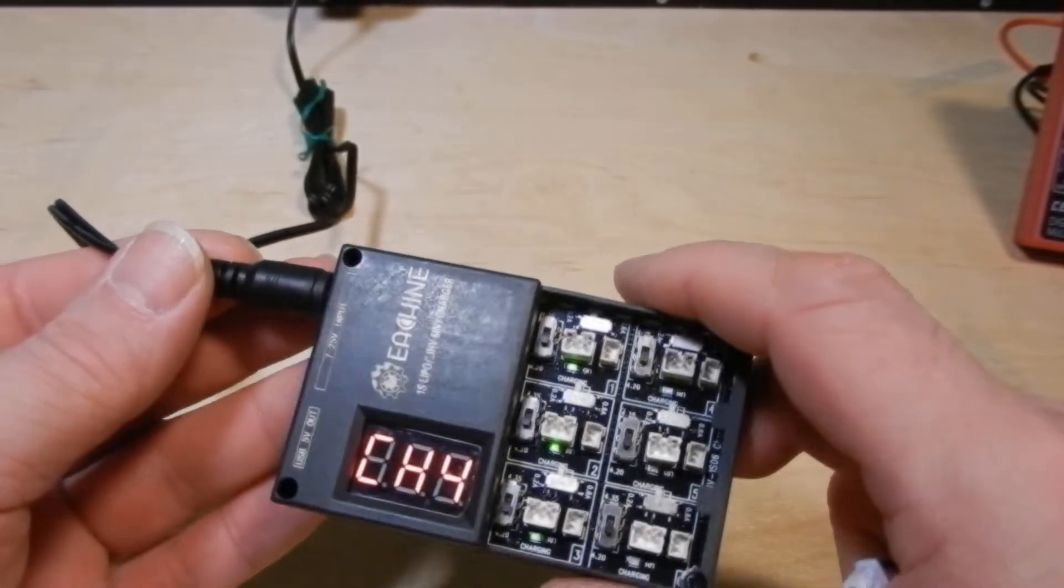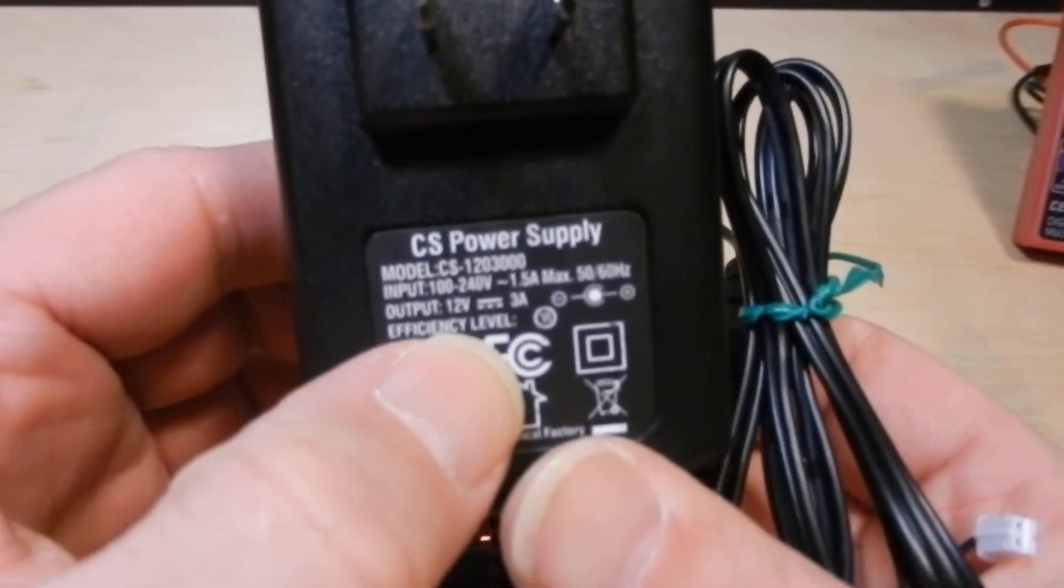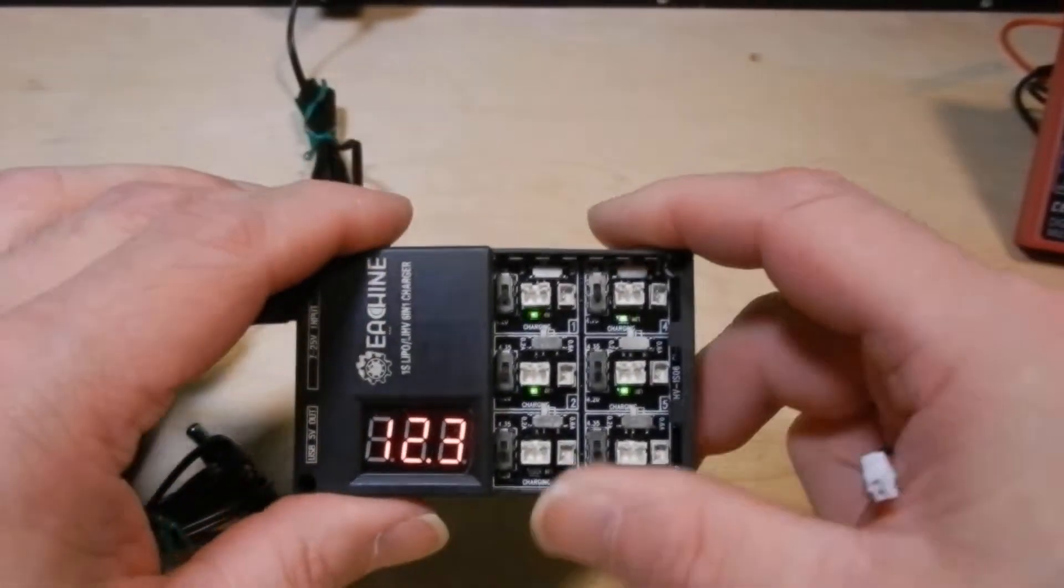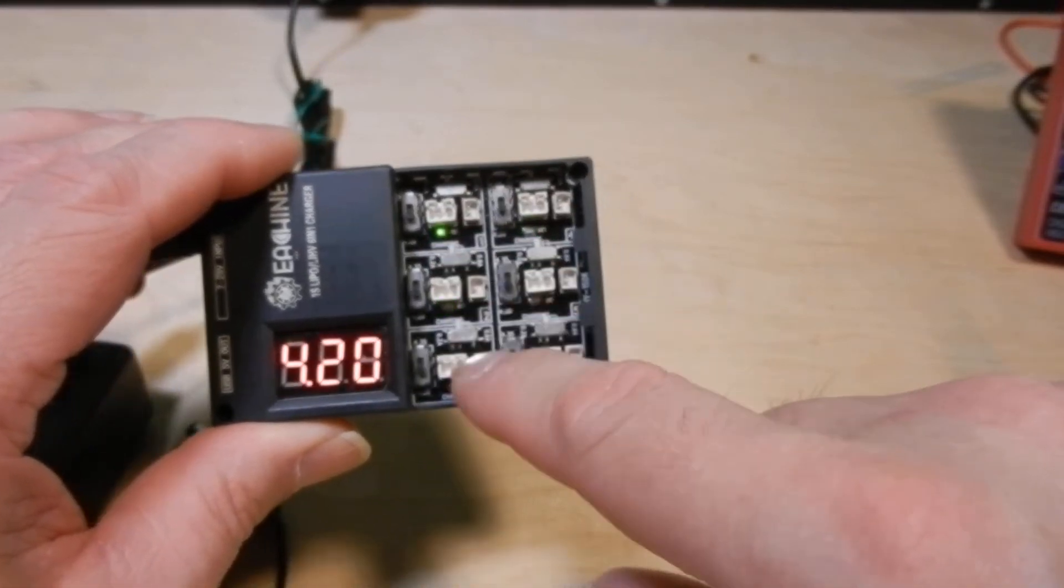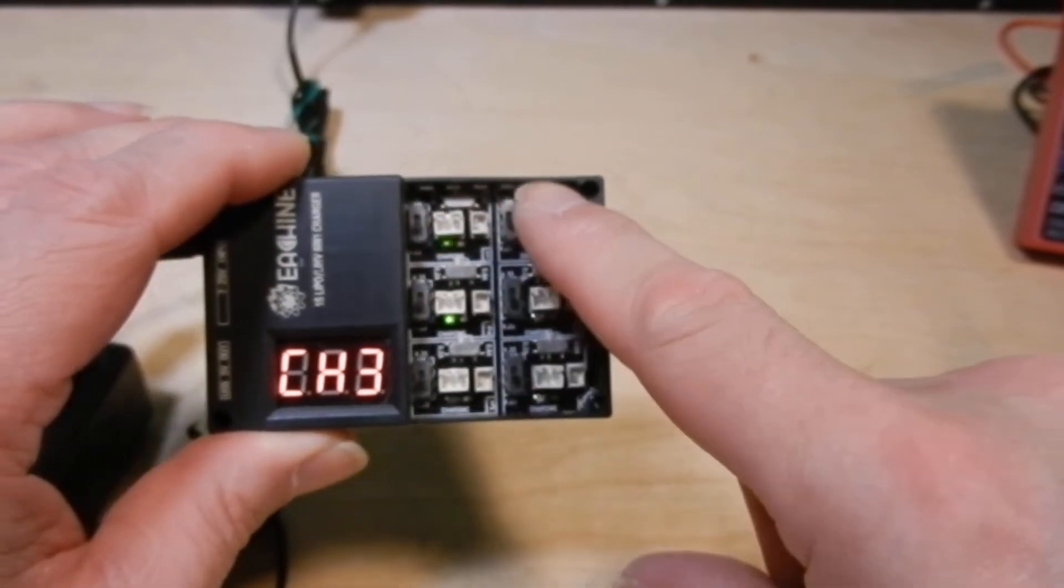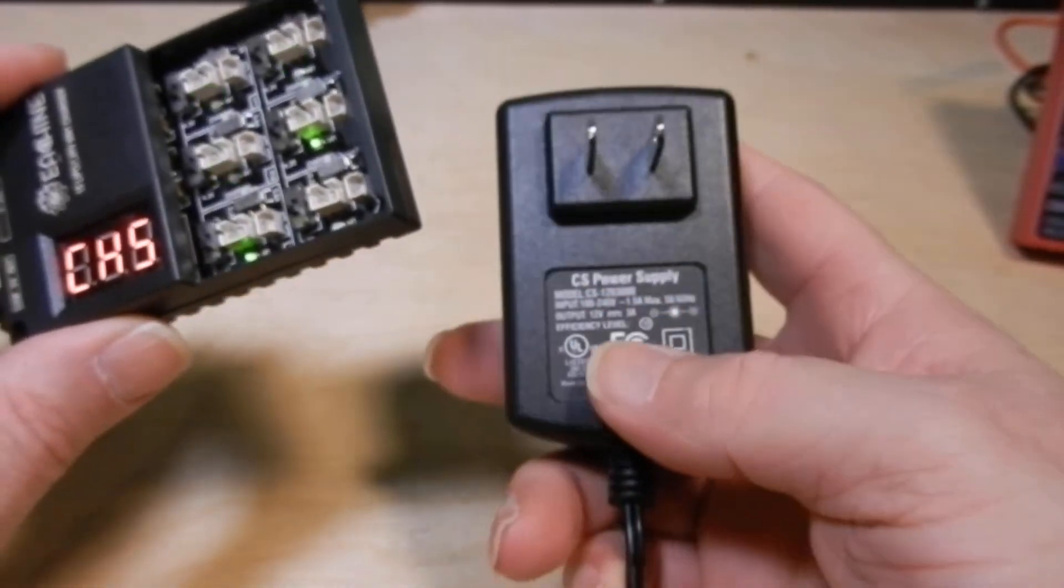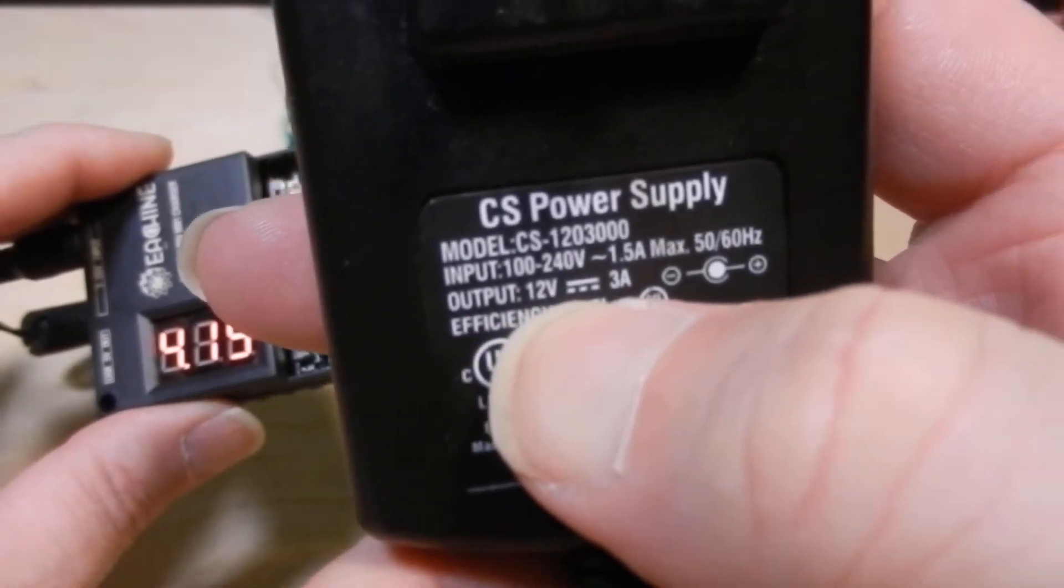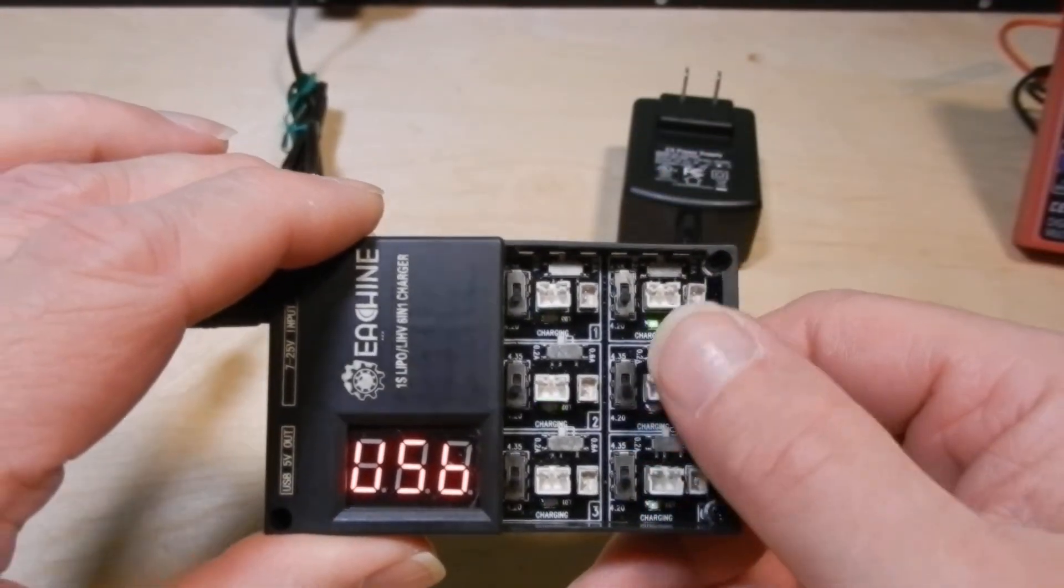Right now what I got going in here to power this is just a wall wart and it is a 12 volt 3 amp. Being that these are all set at 200 milliamps, that's safe. When you look at your milliamps, you got to add up every channel. You got 200 per channel, so that's 200 times 6. That's 1200 milliamps. And you always want a 40% or 50% safety margin on what you're actually powering it with. This is a 12 volt 3 amp, so that's plenty. They recommend at least a 2 amp for the 200 milliamp charge.